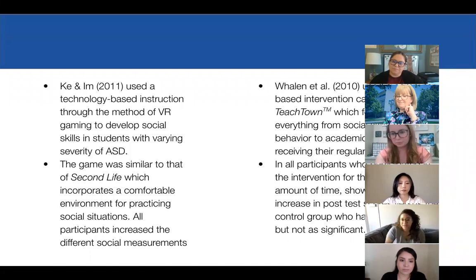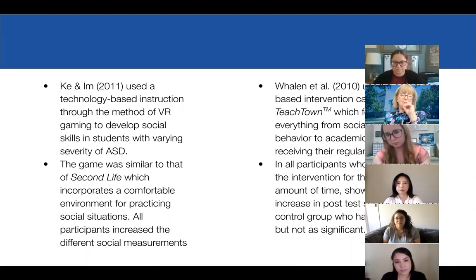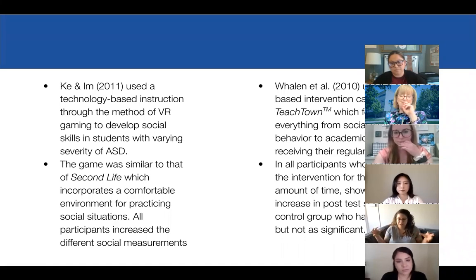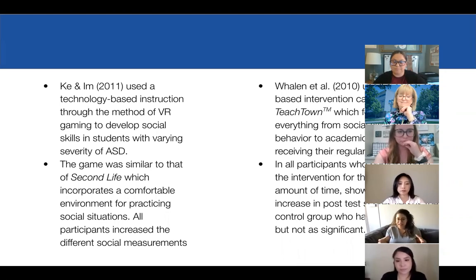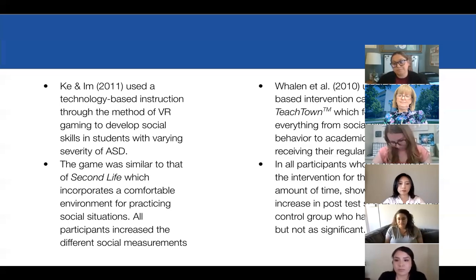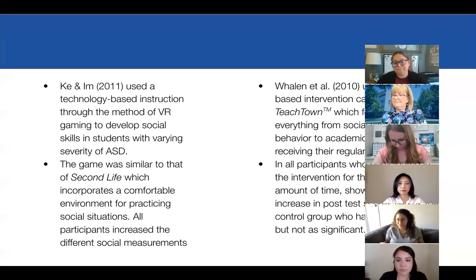The next study, Ke and Im, used technology-based instruction through VR gaming to develop social skills in students with varying severity of ASD. It was based on a game called Second Life — an immersive game where you create your own person and walk around in social situations. The intervention used a similar game to give students a more comfortable way to learn. Students greatly increased in areas like greetings, conversation starters, and everything that goes into social interactions.